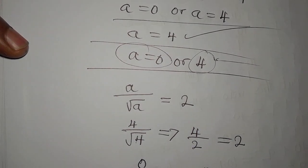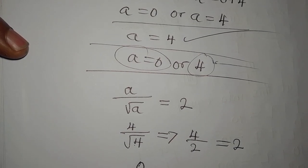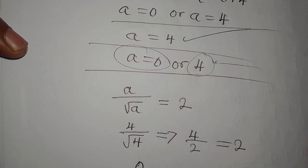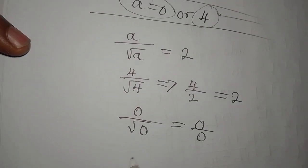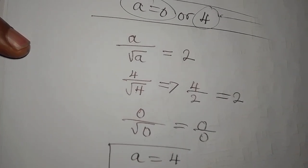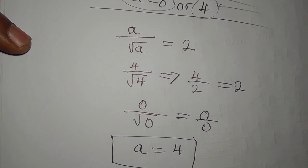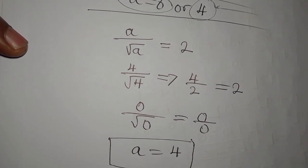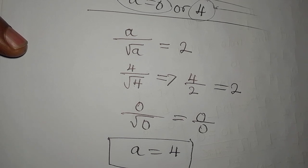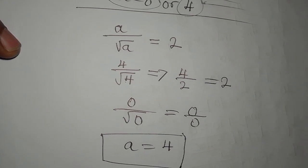So therefore, the first method gives us only the real solution, which is a equals 4. But the second method gives us the real solution and the unneeded solution. So if I were you, I will know the method to use. Thank you for watching, and then subscribe to my channel.